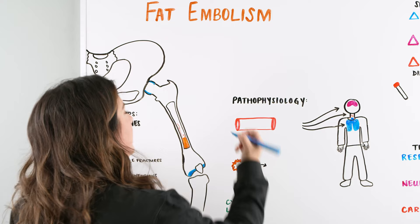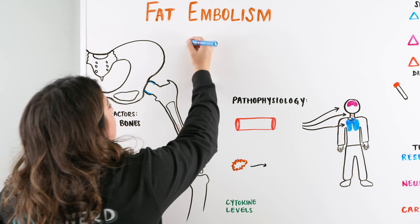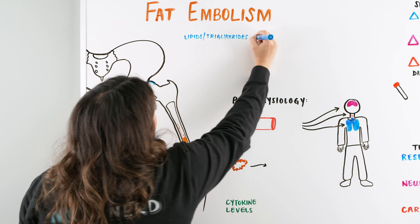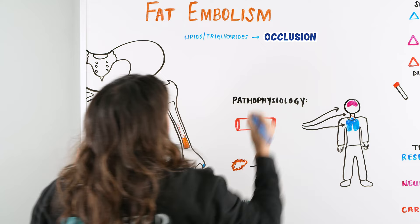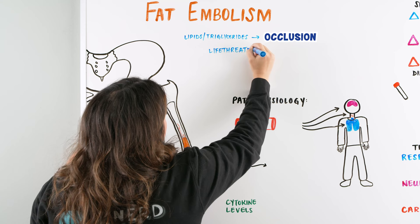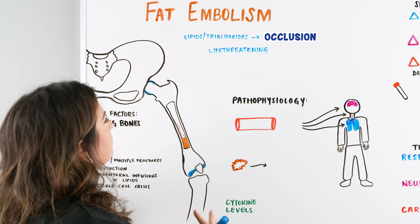So a globule of fat — triglycerides — that can obstruct something really important to us, like our brain, our heart, or our lungs, and then potentially cause life-threatening problems. A fat embolism is basically lipids or triglycerides that cause some sort of occlusion. It can be life-threatening, so we want to think about what could cause life-threatening issues: a blockage to our brain, a blockage to our heart, or a blockage to our lungs. These are the three we're going to keep hitting on when we talk about fat embolism.